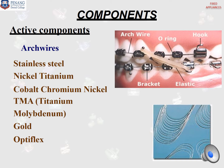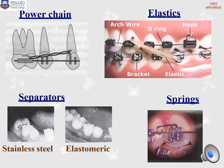Components of fixed appliances can also be divided into active components and passive components. The active components include archwires — there are many types: stainless steel, nickel-titanium wire, cobalt-chromium nickel wire, TMA (titanium-molybdenum alloy) wire, gold wire, and optiflex wire. Other active components are power chains, elastics, separators, and springs. Power chains are used to move teeth in the same arch. Elastics are used to move teeth in different arches. Separators are used to separate two teeth and come in two types: standard steel separators and elastomeric separators. Springs are used to torque the teeth.